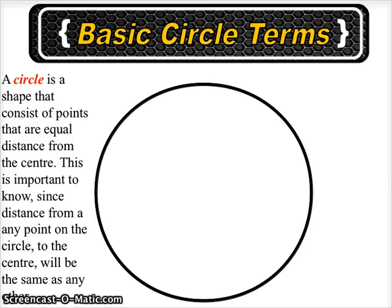A circle is a shape that consists of points that are equal distance from the center. This is important to know since the distance from any point on the circle to the center will be the same as any other.